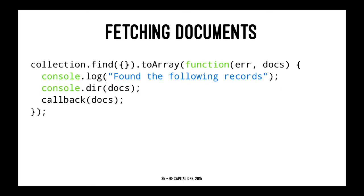Remove takes one argument, similar to the shell command, and then a callback. Find is different because it returns a database cursor, which is not very useful in Node.js. What we want is a JavaScript object or an array, and the way to do that is to invoke toArray(), and then in the callback, docs will be a normal JavaScript object that we can send to a client, process, or do something with.